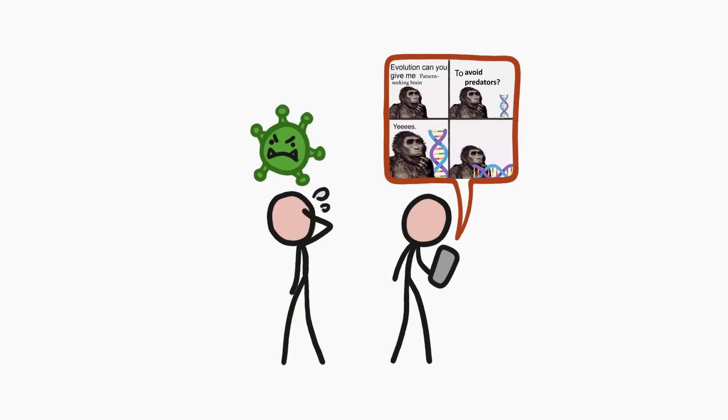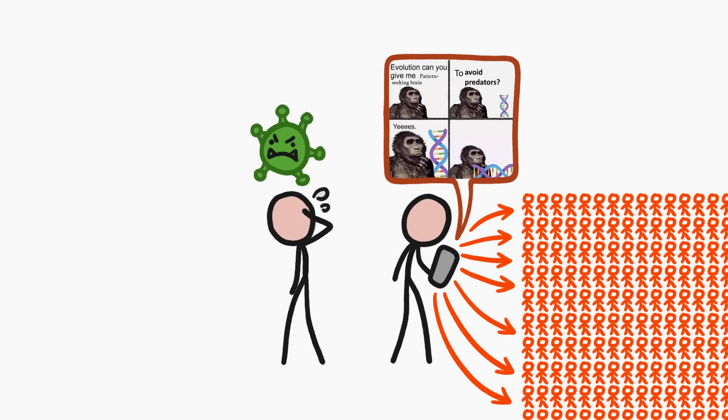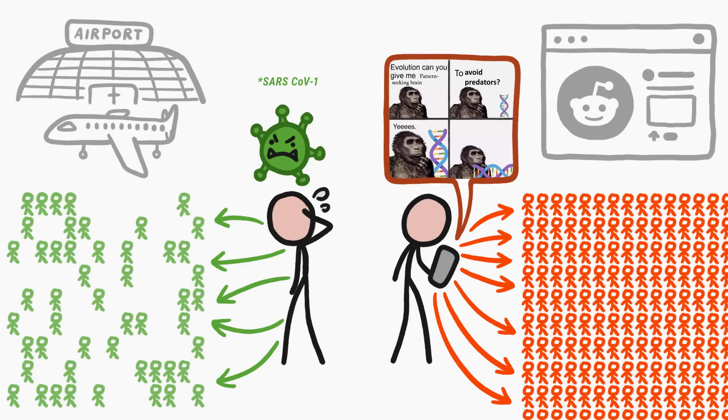One reason memes might be able to out-viral viruses so well is because so many people can be exposed to each individual case. Sure, one person with SARS might expose a few hundred people in an airport, but that's nothing compared to how many people might see a single instance of a meme someone shares on Reddit.